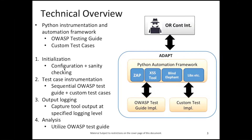As a technical overview, I want to highlight three main pillars of the tool. The first is the Python automation framework, which contains ZAP, cross-site scripting tools, a tool called Blind Elephant, and our cryptographic libraries. On top of this Python automation framework, we run two modules concurrently: the OWASP testing guide implementation, and in parallel, custom test case implementations that are not yet covered by the OWASP testing guide.